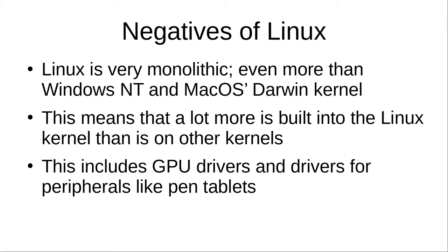Now it's not all sunshine and rainbows — there are some negatives to Linux. For example, Linux is very monolithic, even more than Windows NT and macOS's Darwin kernel. What that means is there is a lot more built into Linux than there is in other kernels, including GPU drivers and drivers for peripherals like pen tablets. Essentially, if you plug in a pen tablet or use a different graphics card on Linux, you wouldn't really need to install any drivers — it would just work as long as it was supported by the kernel. However, it also means you don't really get the option to change or remove any features from the kernel, even if you're not using them, unless you're willing to compile the kernel yourself. And this is why compiling the kernel is so popular — it's a very large project with support for lots of hardware you're probably not using, so it's convenient to go through and delete things you don't need.